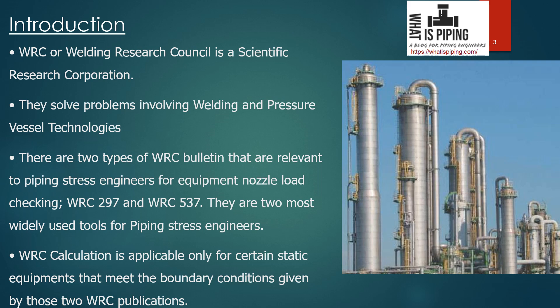Out of those 500+ bulletins, WRC 537 and WRC 297 are two specific bulletins that solve different problems relevant to our course.